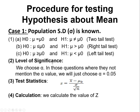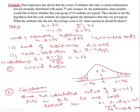Step 2: level of significance is 0.05. Step 3: the test statistic is z equals x-bar minus mu divided by sigma divided by the square root of n. Step 4 — calculation: substituting values gives z equals 82 minus 75 divided by 6 divided by the square root of 16. Simplifying, this gives a calculated z value of 4.67.